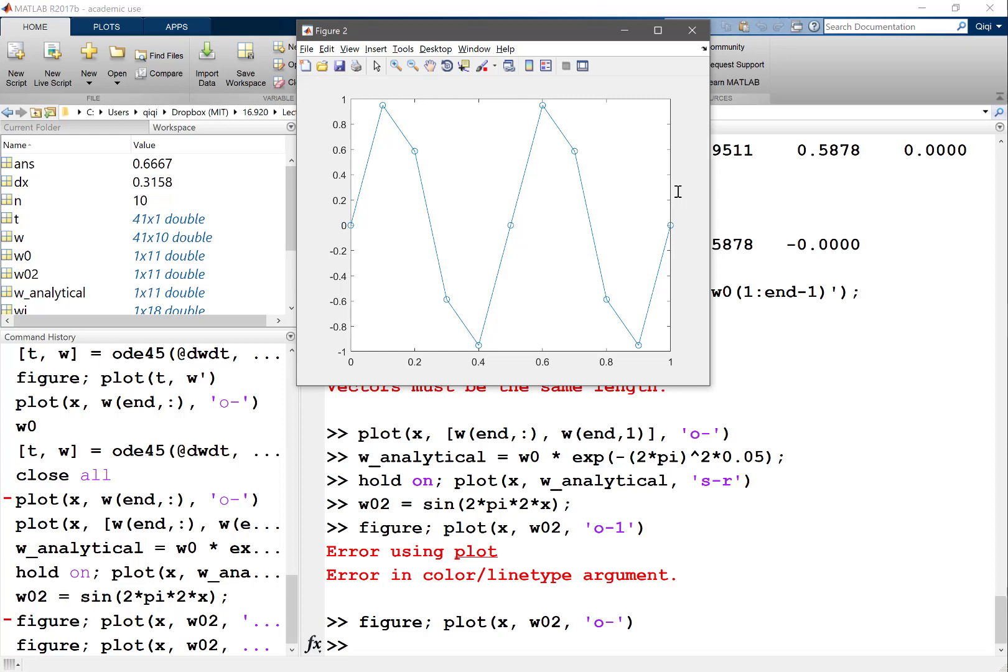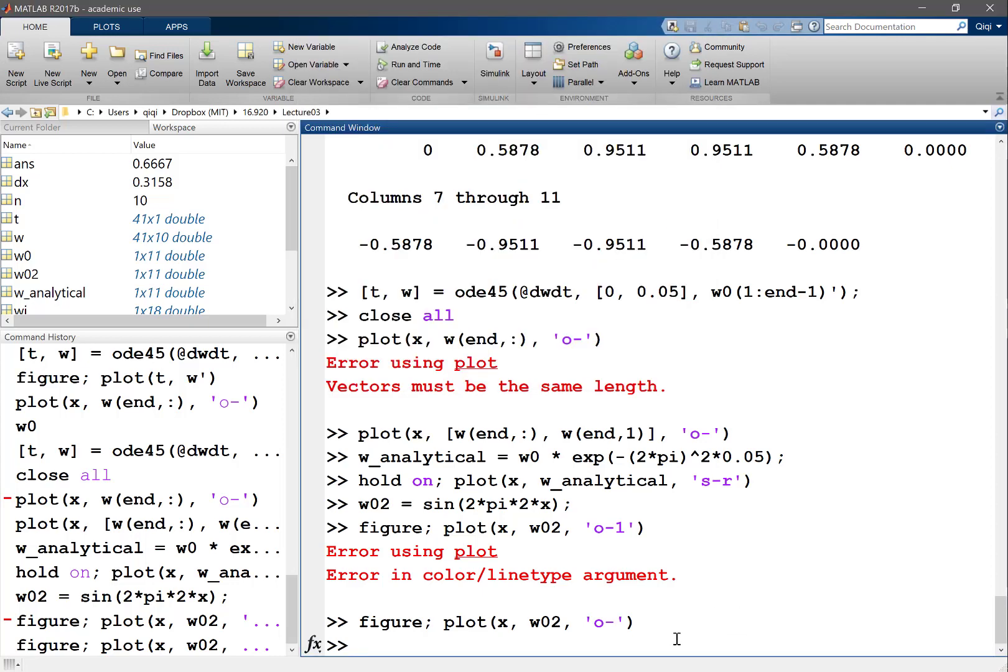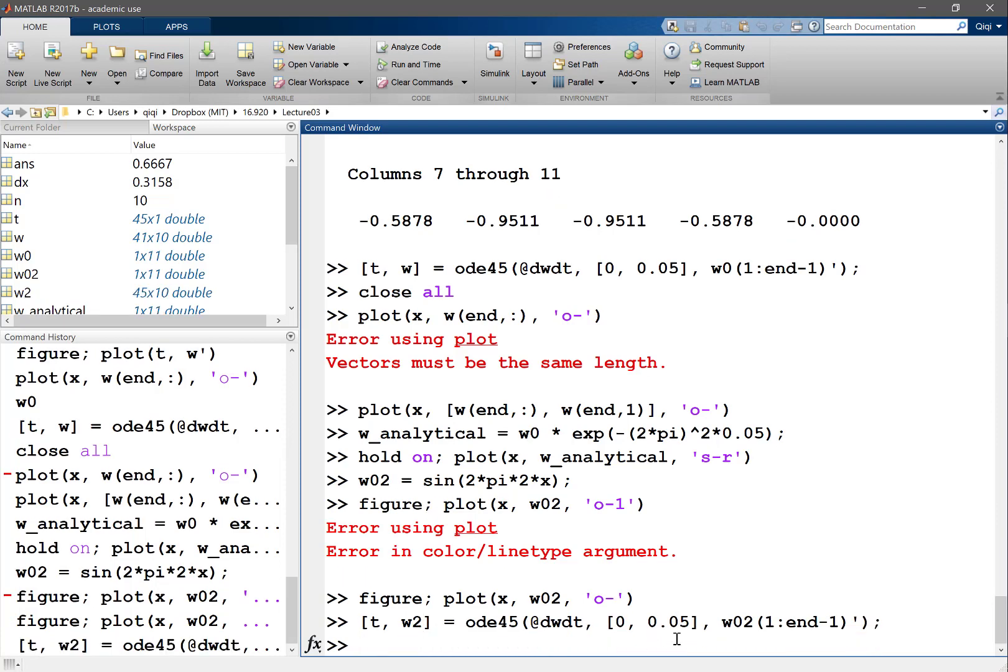If I make a new figure, if I plot x versus W02, I get a different sine curve. As you can see, my representation of the sine function is actually much worse over here. It doesn't really look like a sine function at all anymore. Let's just use the same scheme to solve it and see what we get.